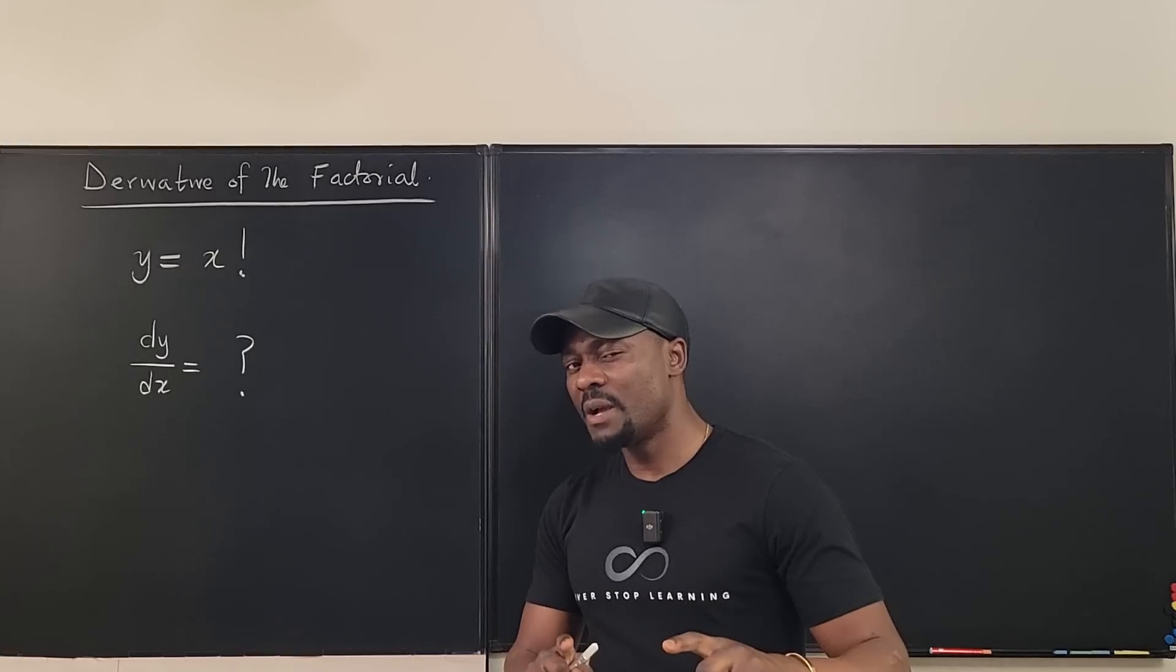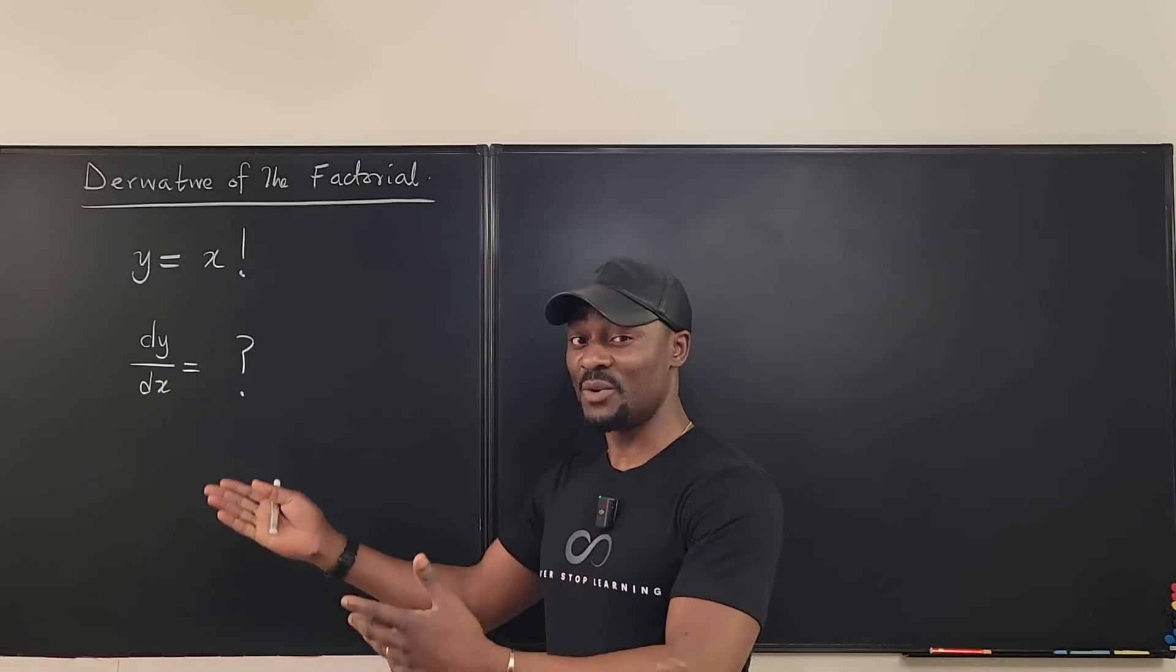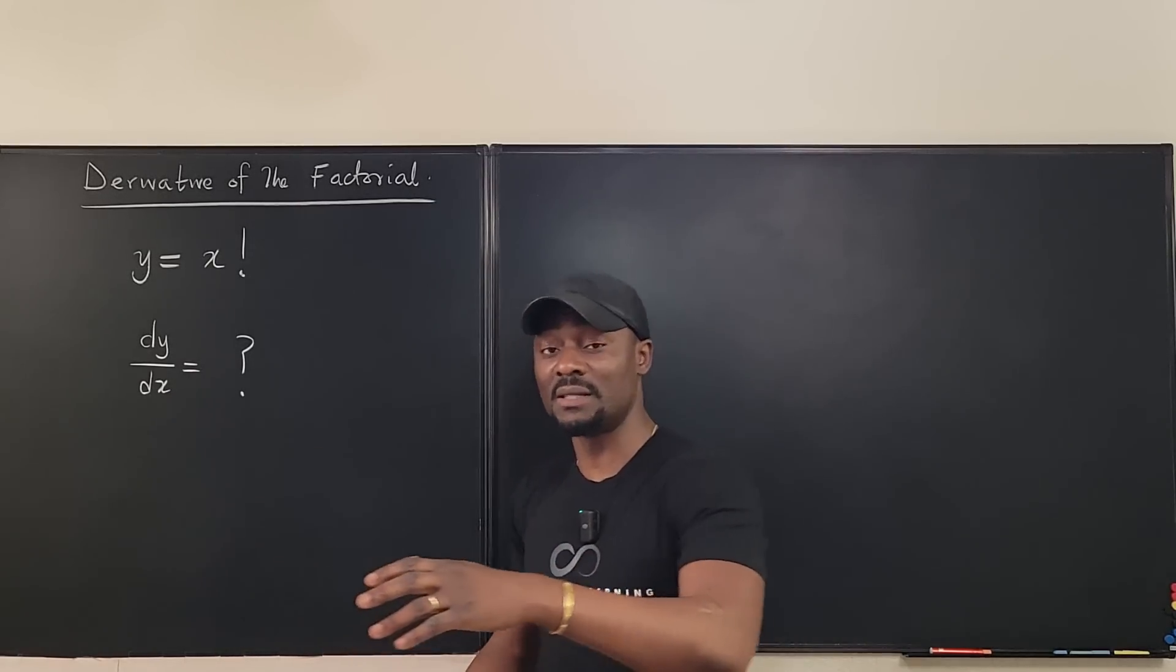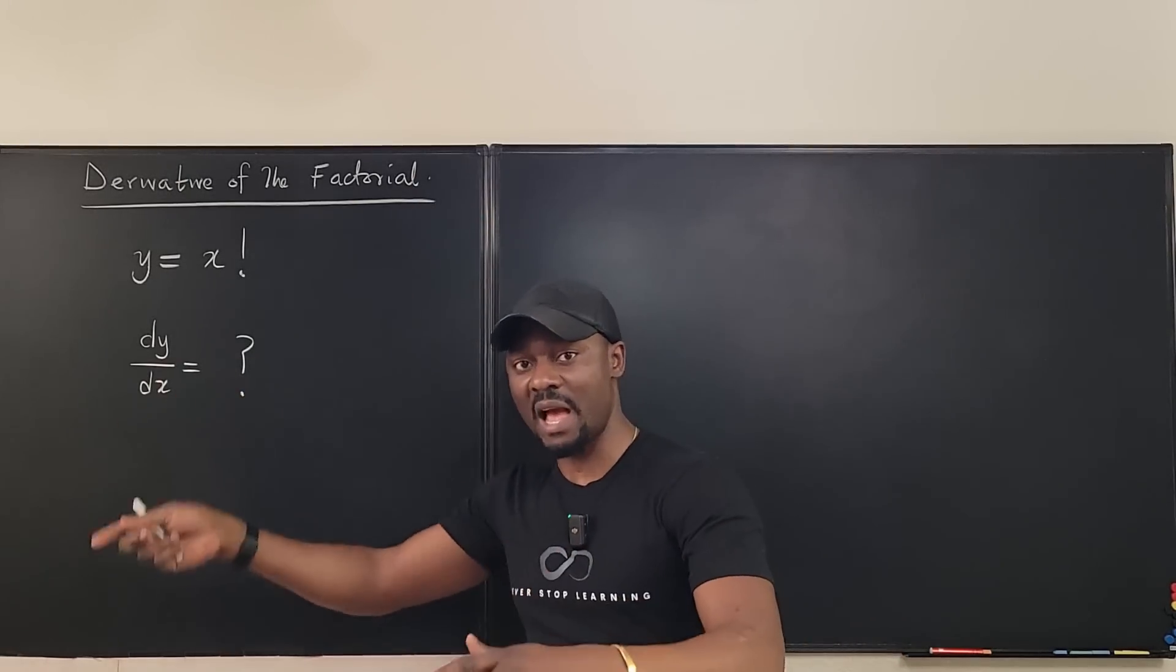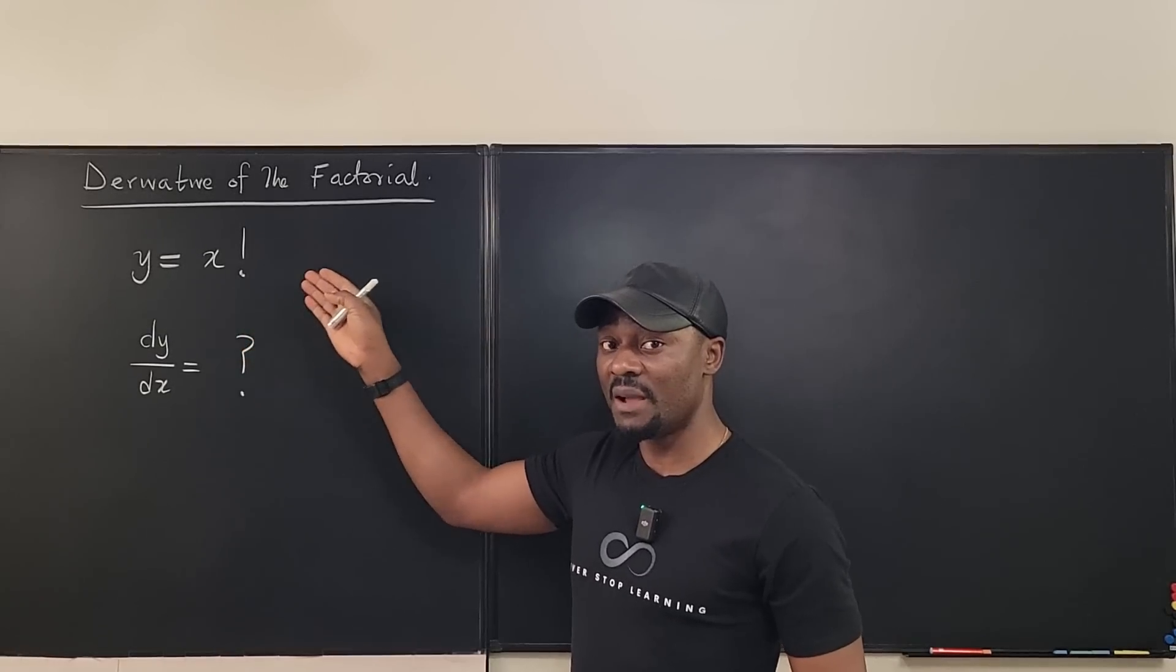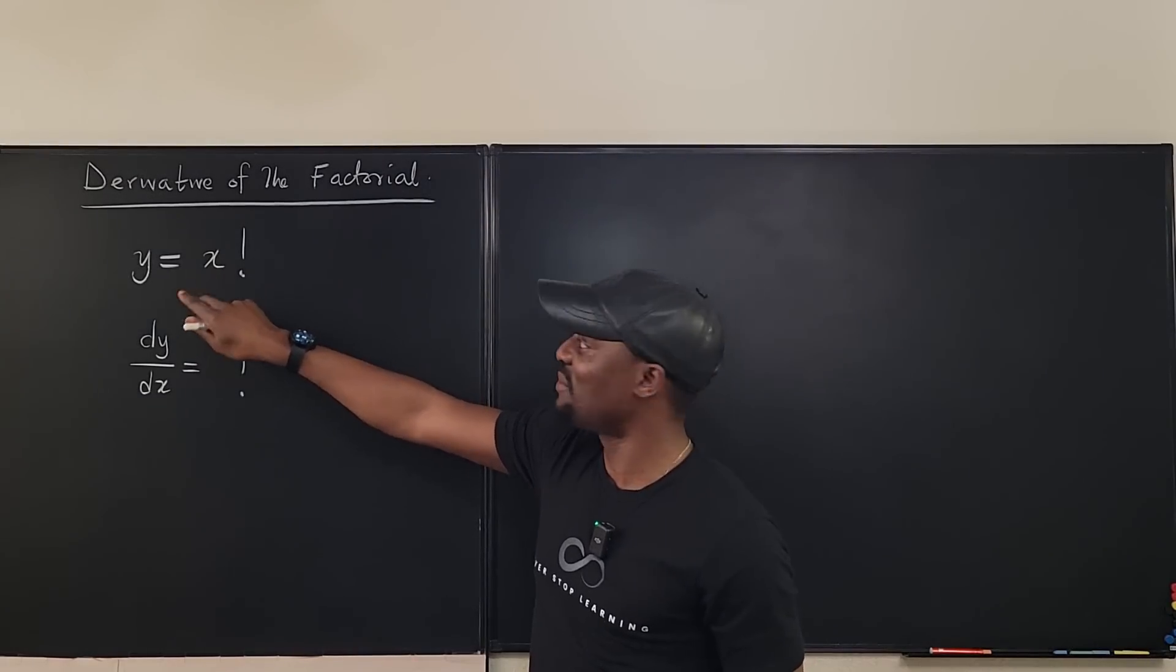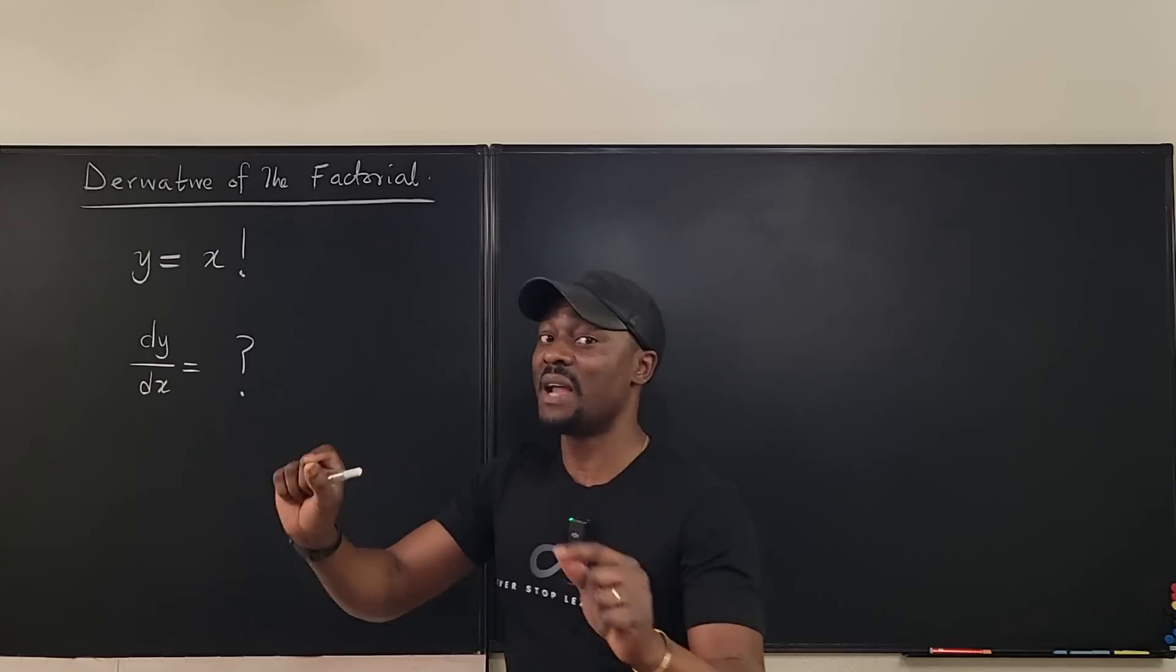Now because we're talking about taking the derivative of the function, it has to be a continuous function. We can't take the derivative of discrete functions because you're just going to have all kinds of gaps. So it's definitely either the gamma function or the pi function. But look at this, I'm not going to be differentiating the gamma function. It's going to be the pi function because I went straight to x factorial. I'm not differentiating x minus 1 factorial.